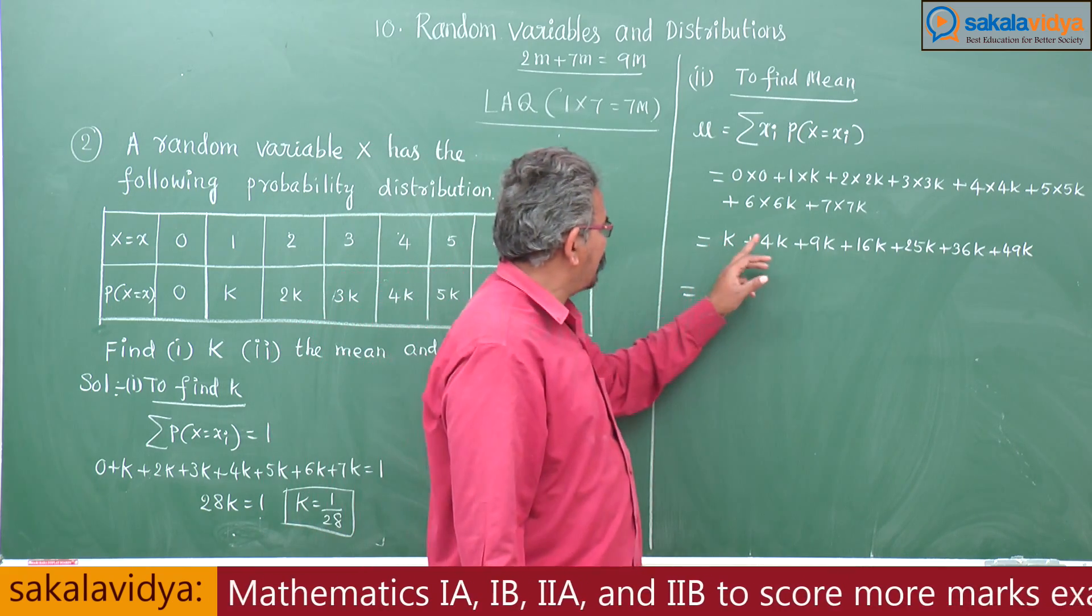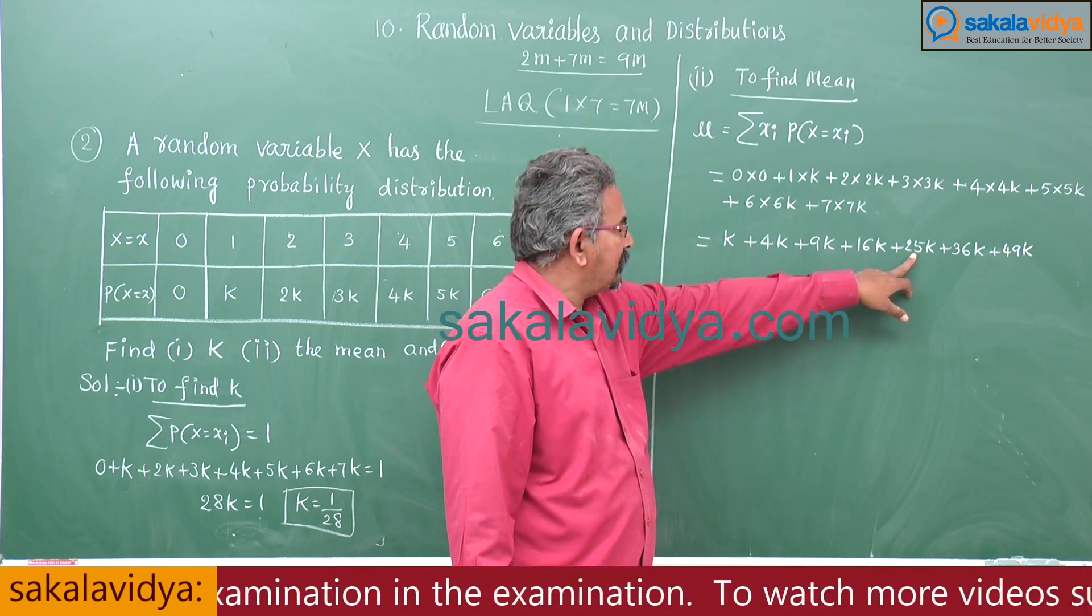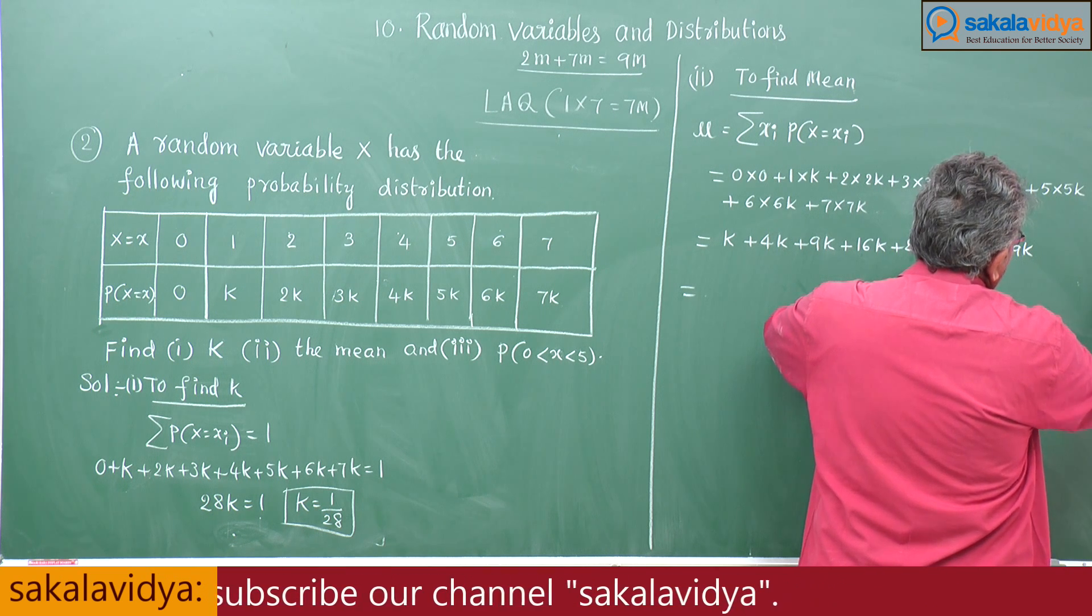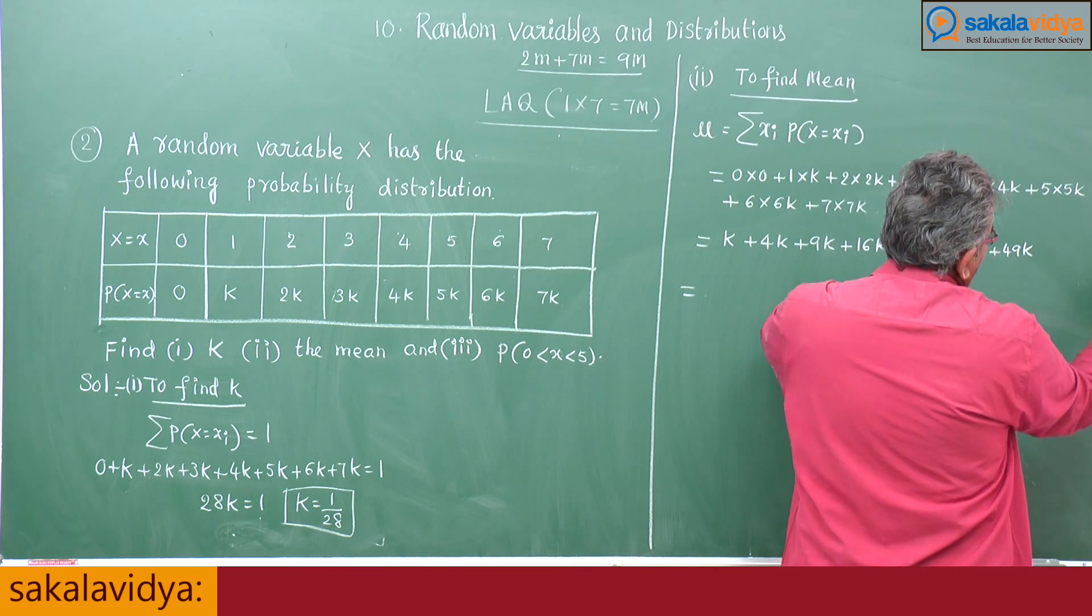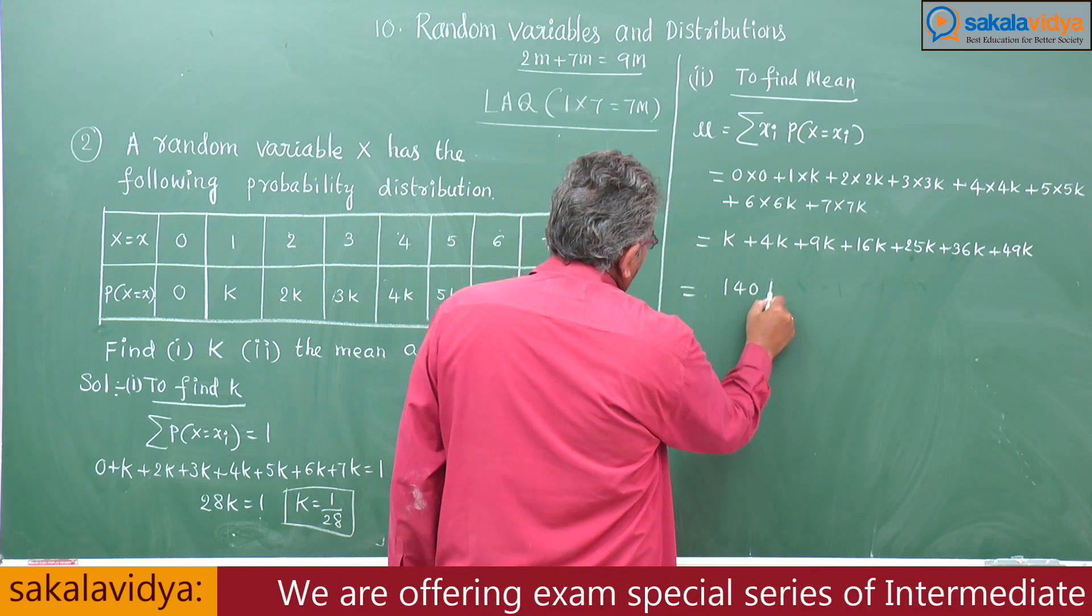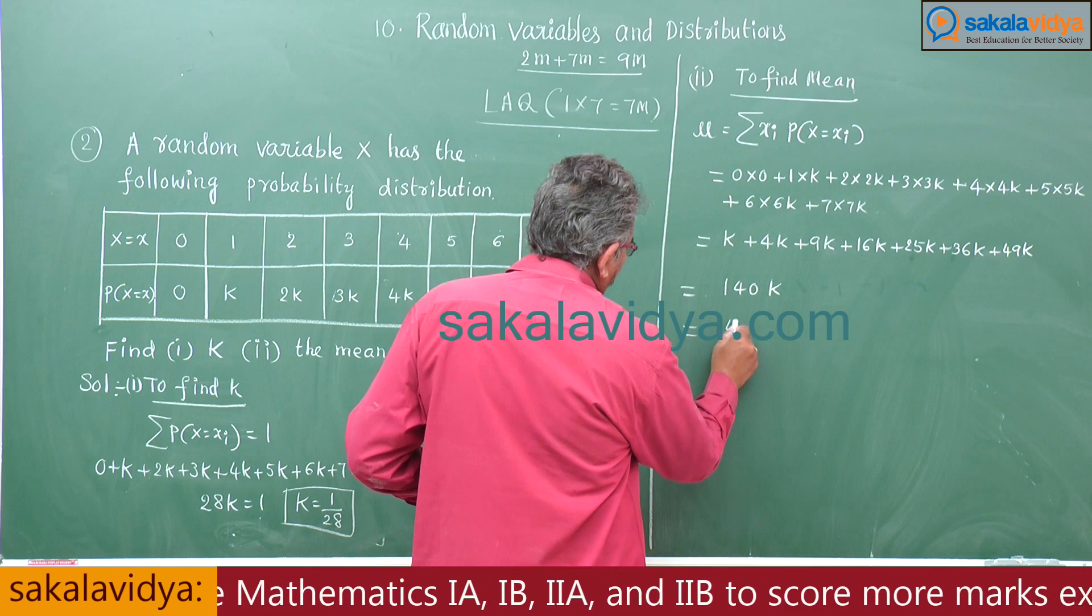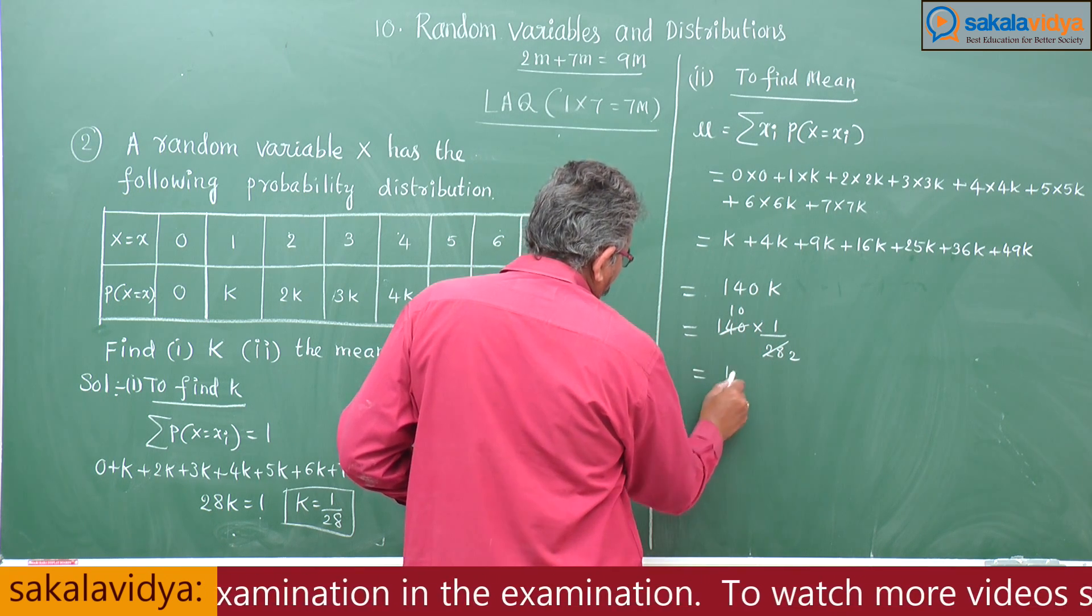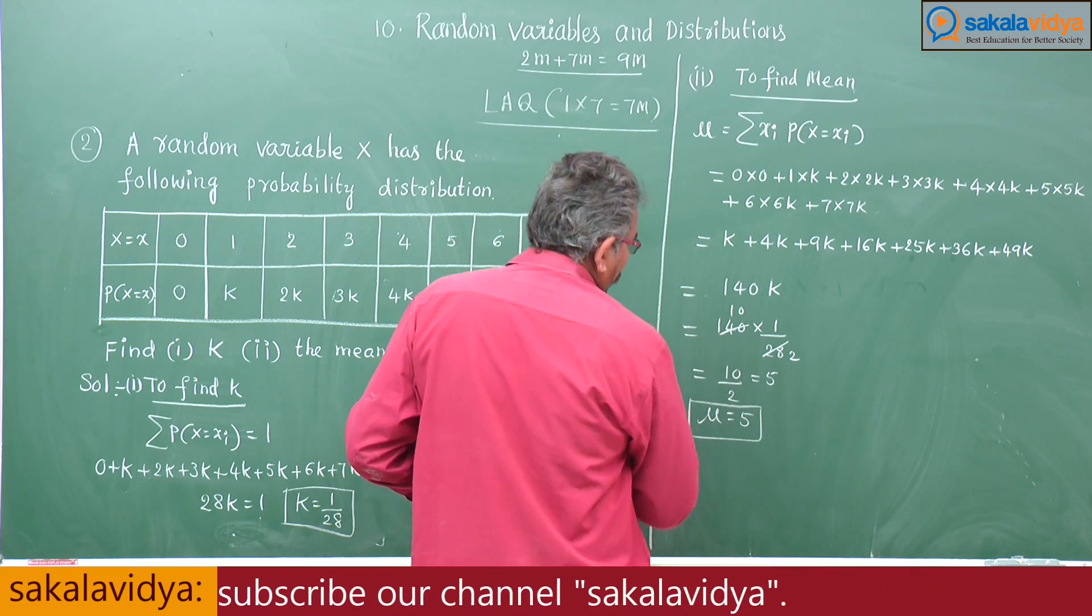See, 1 plus 4 is 5, 5 plus 9 is 14, 14 plus 16 is 30, 30 plus 25 is 55, 55 plus 36 plus 49. So total 140K. 140K, we have K is 1 by 28, so 140 into 1 by 28, that is equal to 5. So mu equals 5, the mean has been obtained.